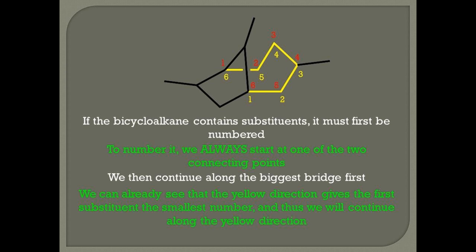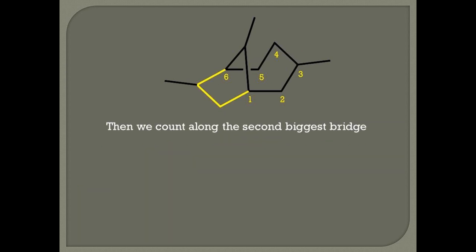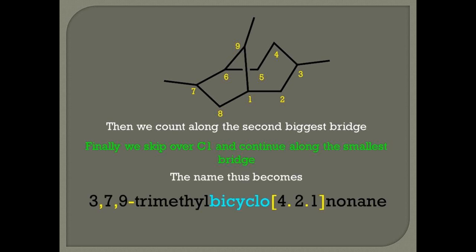And thus, we will continue along the yellow direction. Remember, all the rules of naming alkanes apply. After counting through the biggest bridge, we count along the second biggest bridge. And when that's done, we finally skip over C1 and continue along the smallest bridge. The name of this molecule becomes 3,7,9-trimethylbicyclo[4.2.1]nonane.